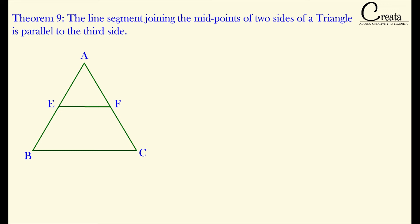As per the theorem, this line segment EF is parallel to the third side that is BC. We have to prove EF is parallel to BC.